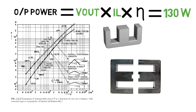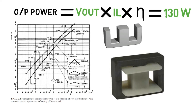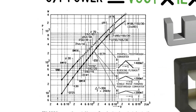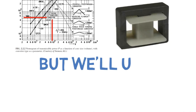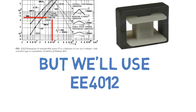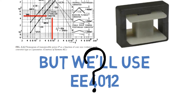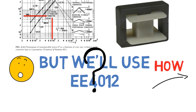When making a transformer, we use two E cores of the same size and connect them together. A bobbin comes in between which provides insulation between the core and wire. According to the chart, we may select the double E4215 core, but to fulfill our design we use the double E4012 core, which is smaller in size. We'll understand why after finding the number of turns, which we'll cover in the next part of the flyback converter series.